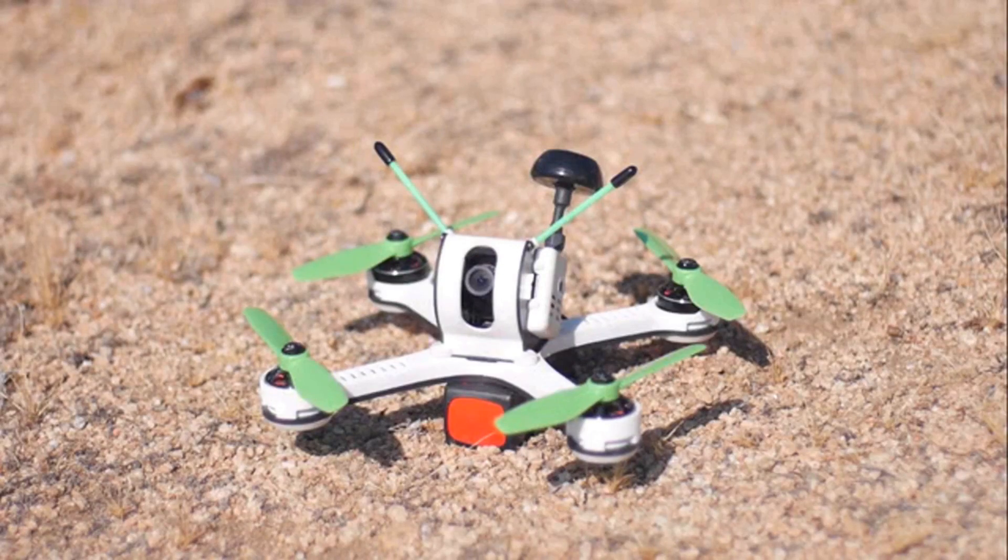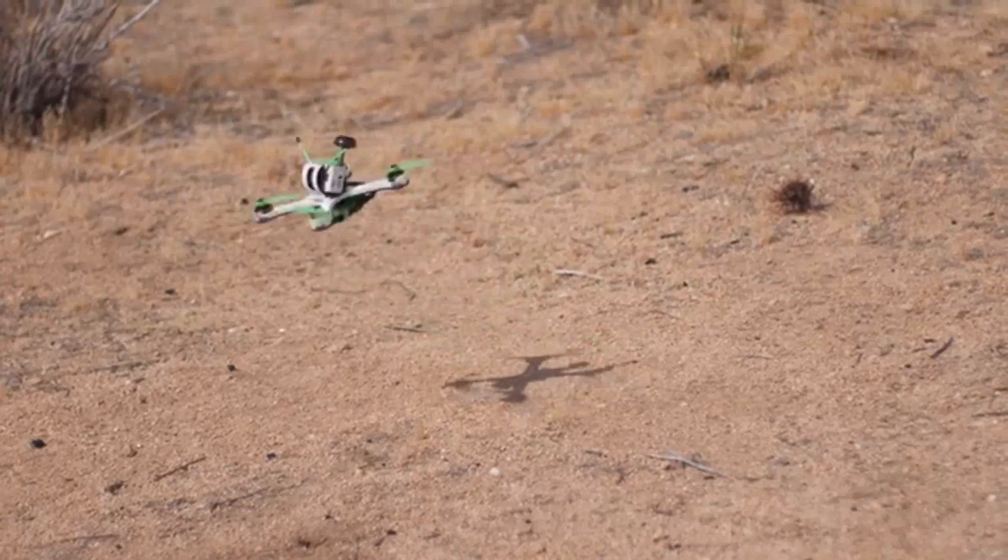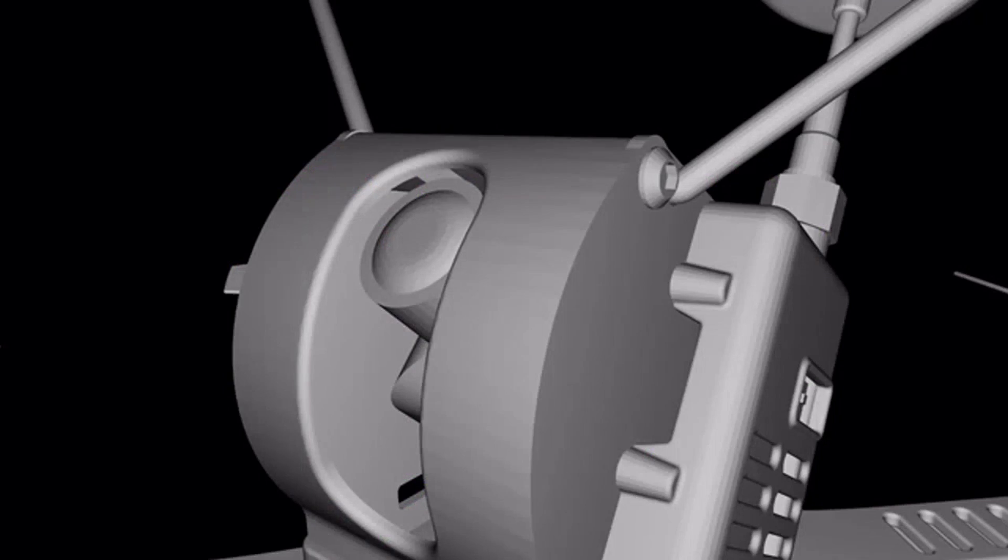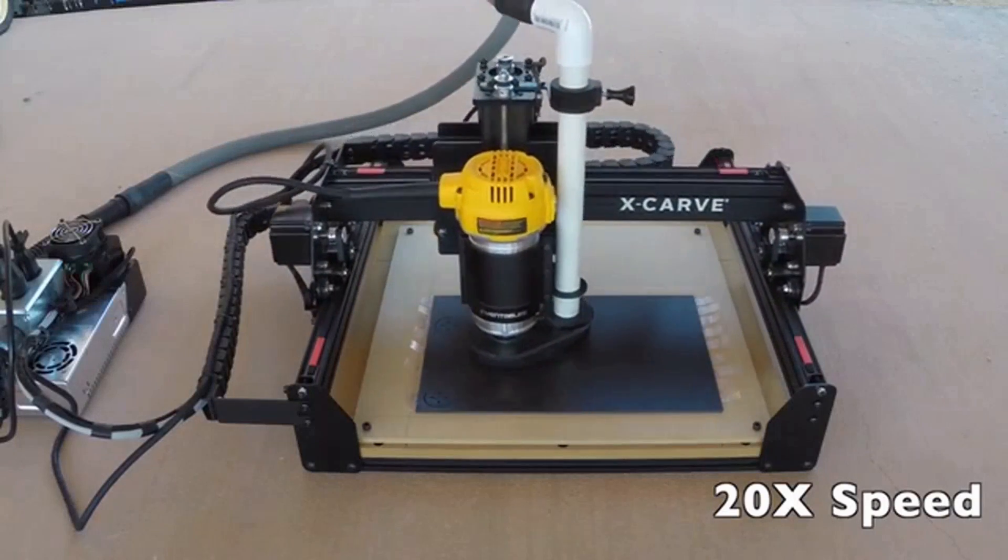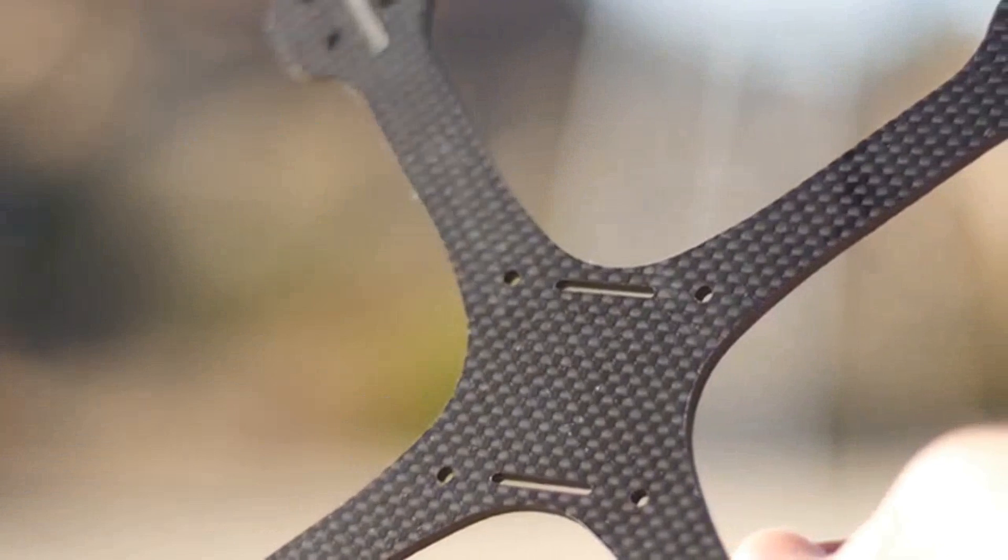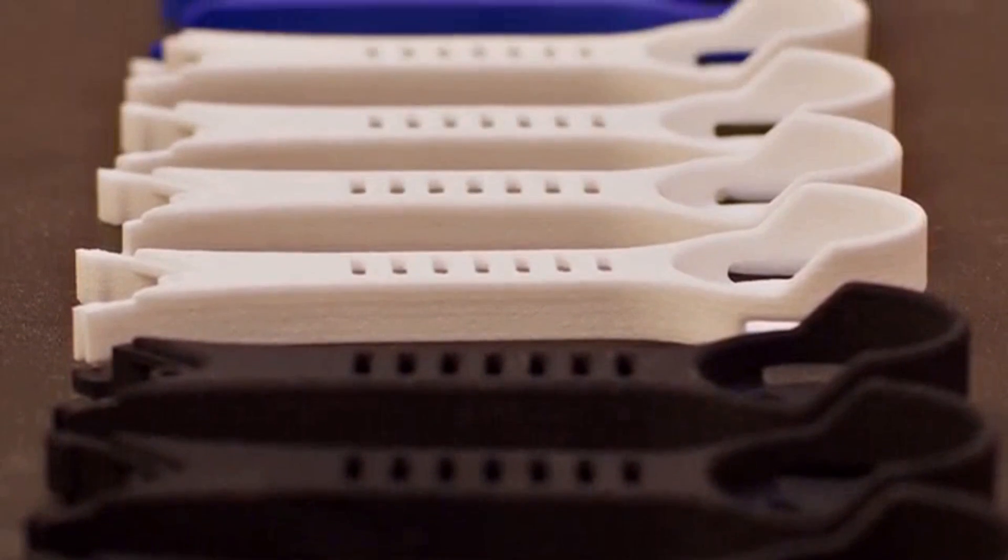Meet Tanki. Tanki was born out of an obsession. An obsession to build the quickest, lightest, and most feature-rich racing quadcopter possible. We built Tanki with a carbon fiber skeleton for rigidity and a polycarbonate skin to give it extreme toughness.